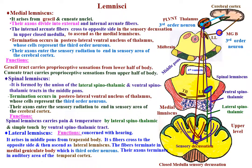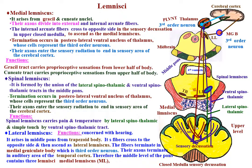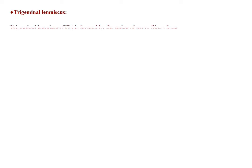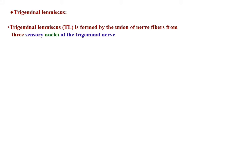Therefore, the middle level of the pons contains three lemnisci: medial lemniscus, spinal lemniscus, and lateral lemniscus. Trigeminal lemniscus is formed by the union of nerve fibers from three sensory nuclei of the trigeminal nerve in the middle level of the pons,